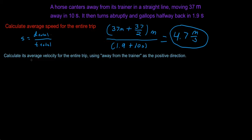The second part of this problem says calculate the average velocity for the entire trip using away from the trainer as a positive direction.